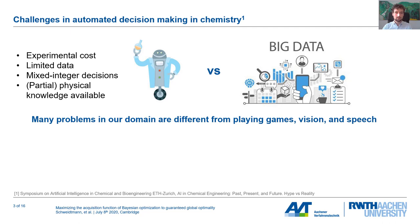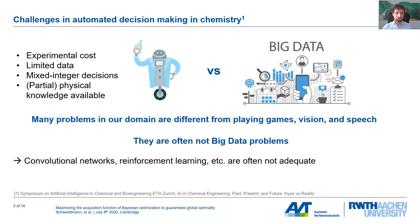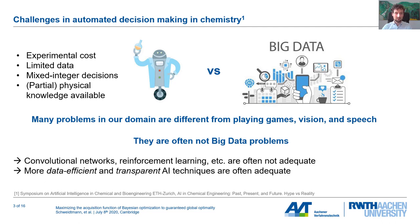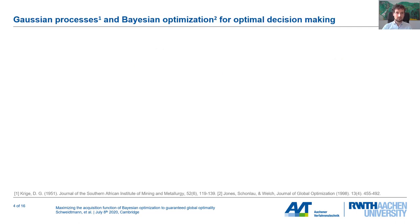In addition, we also have partial physical knowledge available. Therefore, our problems are not big data problems, and convolutional neural networks, reinforcement learning, and many techniques from AI are often not suitable for our problems. We would like to have a quantification of the uncertainty of the predictions of our models, and one very promising way to do that is Gaussian processes and Bayesian optimization.